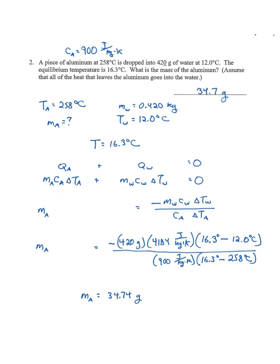The equilibrium temperature is 16.3 degrees. Qa plus Qw, so the heat into the aluminum plus the heat into the water equals zero. One of those is positive, the other is negative. So ma ca ΔTa plus mw cw ΔTw equals zero. We're solving for mass of the aluminum.